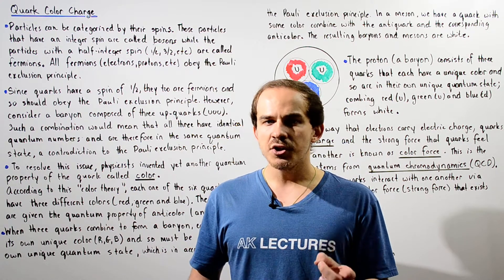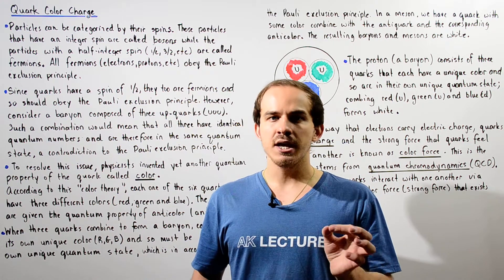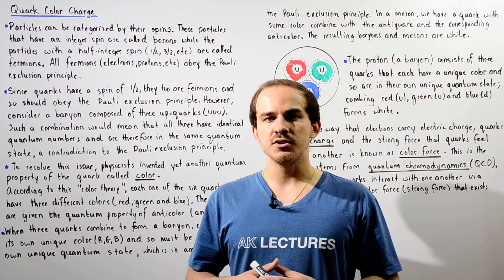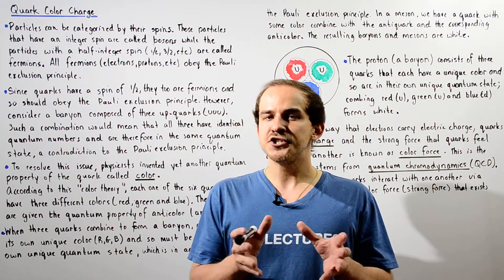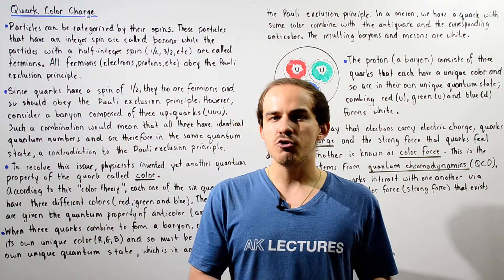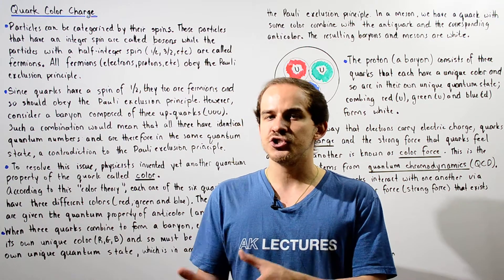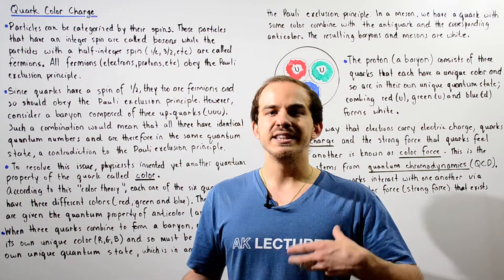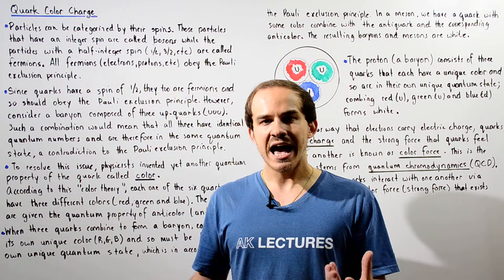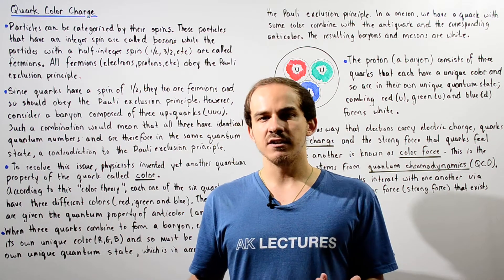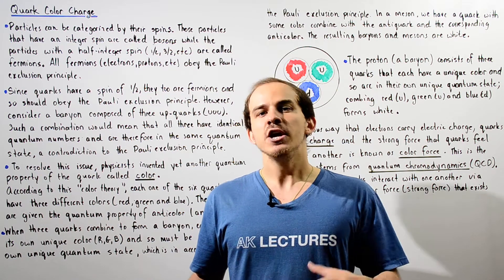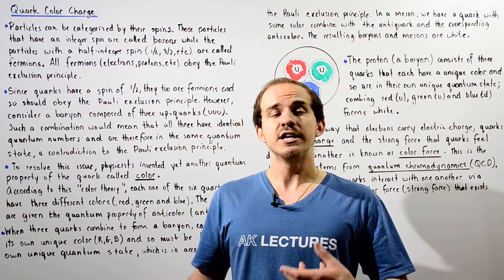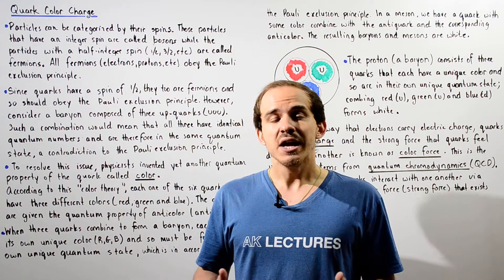On the other hand, fermions are those particles that have a spin value that is equal to half an integer — for example, negative one-half, positive one-half, three-halves, five-halves, and so on.